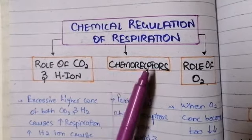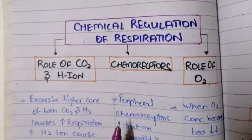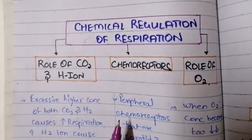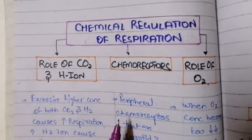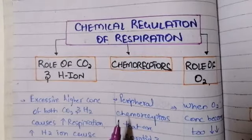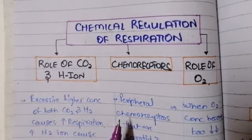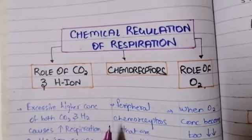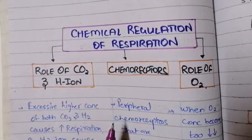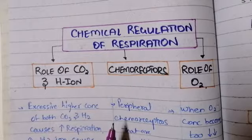As we have previously discussed the neuronal mechanism of respiratory control — through the respiratory centers, the pneumotaxic center, and how these centers control the rate of inspiration, the rate of expiration, and the rhythm of respiration — in a previous video. If you have not watched that video, go and watch it for a complete explanation of the regulation of respiration, which is performed through two mechanisms: neuronal and chemical.